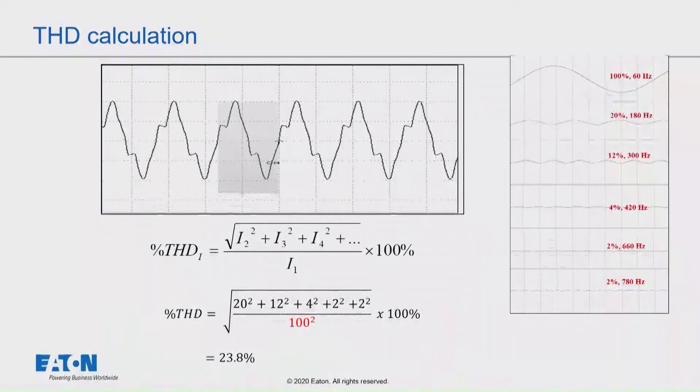In this case, since the fundamental is 100%, let's just use 100 amps as the number. And so we would have 20 amps of third harmonic, 12 amps of fifth, and so forth. As you can see, the higher order harmonics really don't become a big number when you square them. So the lower order harmonics are significant. And we end up with a number that's about 24% distortion.